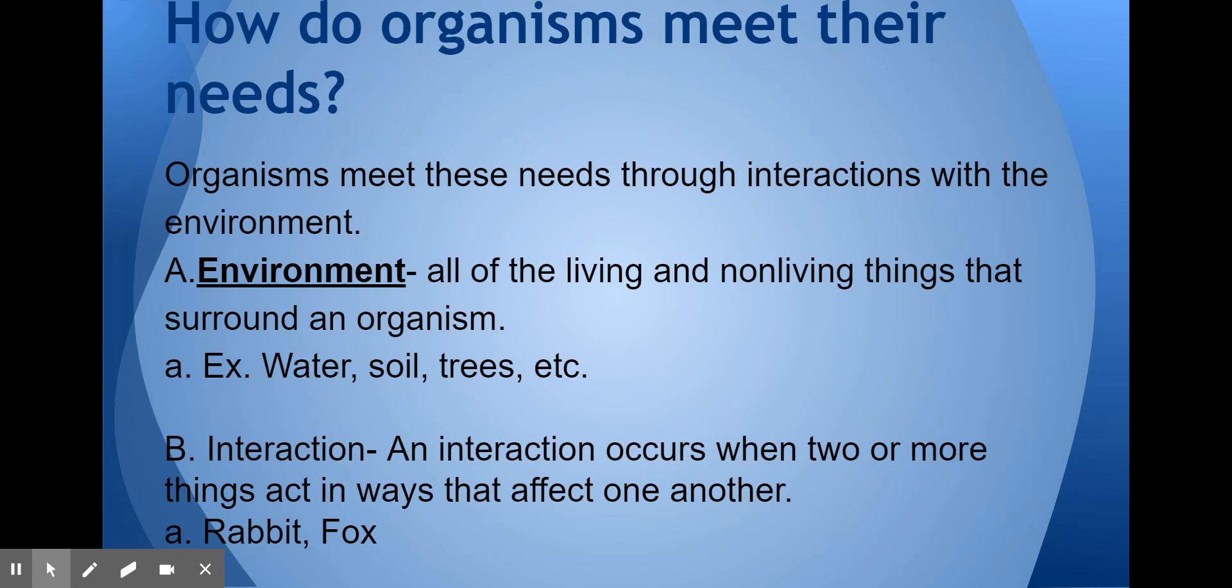The interaction is the occurrence when two or more things act in ways that affect one another. It can be grass being eaten by a rabbit. It can be rabbits being eaten by foxes. Or it could be the temperature change, causing the leaves to fall off the trees. Those are interactions in the environment.